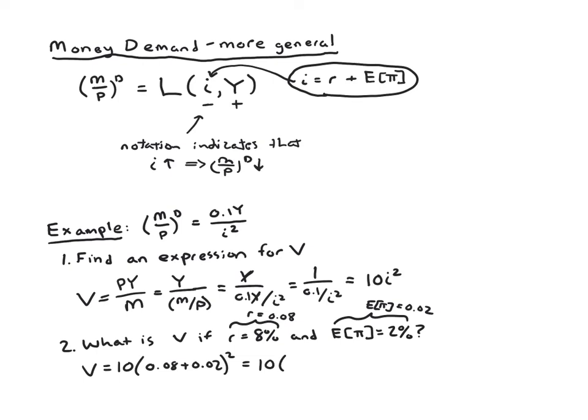And we'll sort of combine terms. We get 10 over 0.1 squared. And then 0.1 squared is 0.01, so we get 10 times 0.01. That's 10 times 1 one-hundredth, so 0.1. So velocity is 0.1.